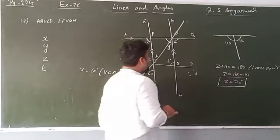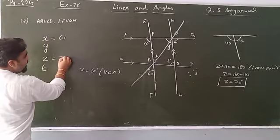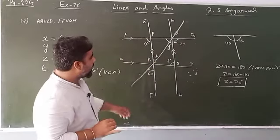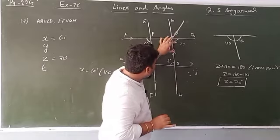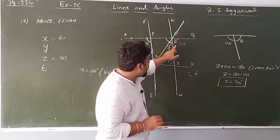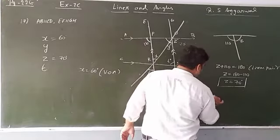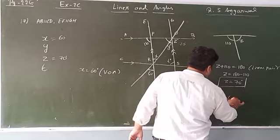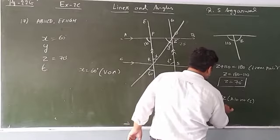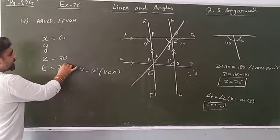So far: x equals 60 degrees and z equals 70 degrees. This angle is 70 degrees. Since these lines are parallel and this is the transversal, z and t are alternate interior angles, so they are equal. Therefore angle t equals 70 degrees.